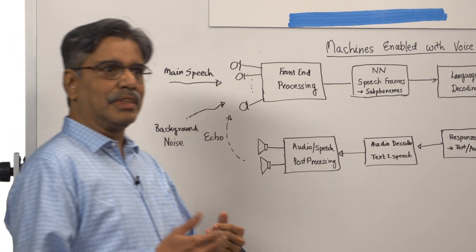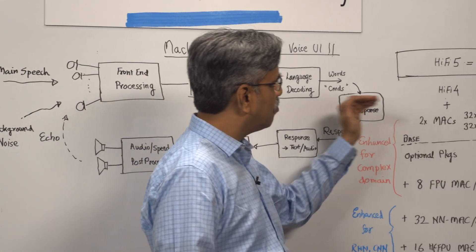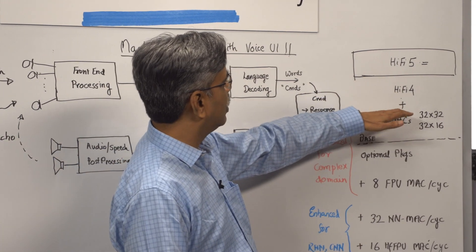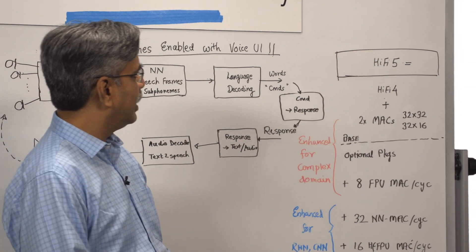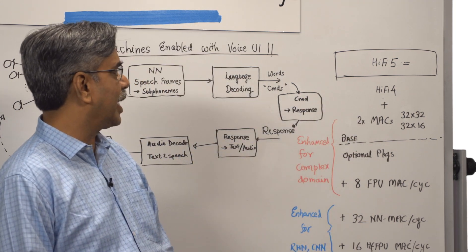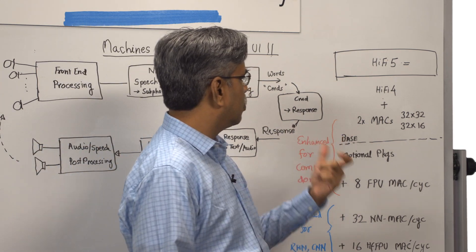However, HiFi 5 is being introduced to really double its capability. If I look at HiFi 4 versus HiFi 5, you can see that we have double the number of fixed point MACs that are required for this front-end complex domain processing.